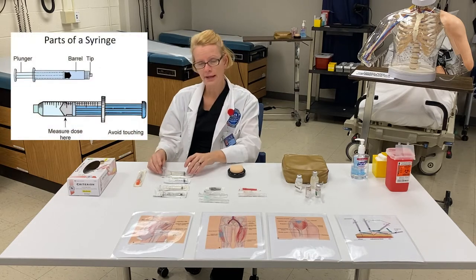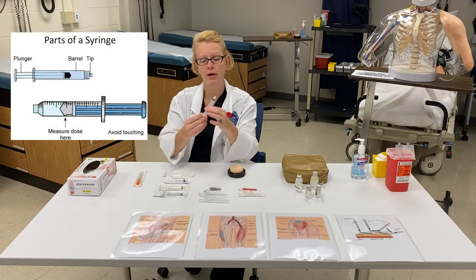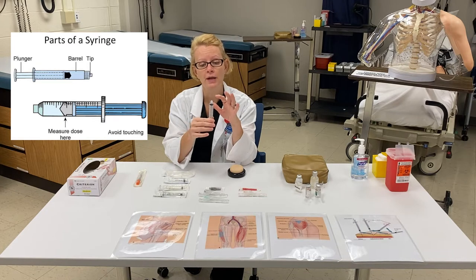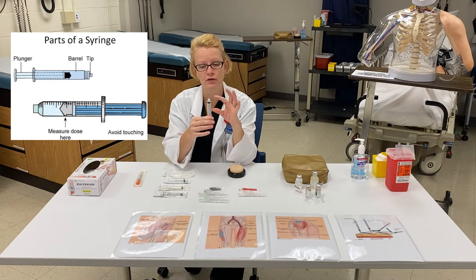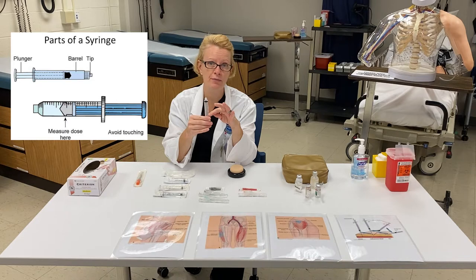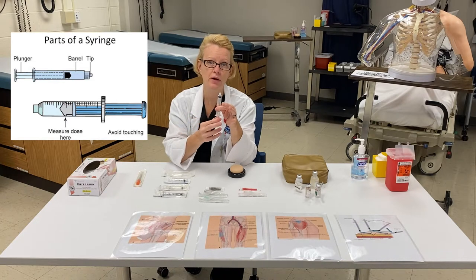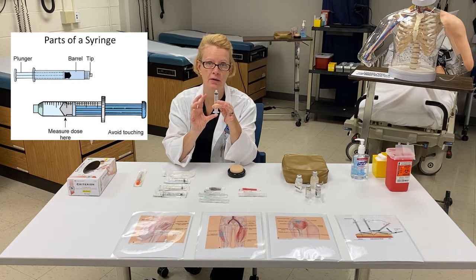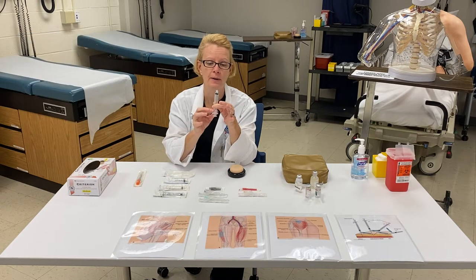When I say anatomy of a syringe, I really mean three parts. It's pretty simple. We have the tip of the syringe, the barrel of the syringe which has the unit of measurements on it, and the plunger of the syringe which pulls the medication into the barrel and pushes the medication out of the barrel into the patient.